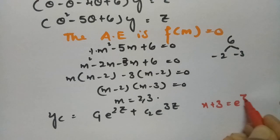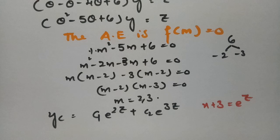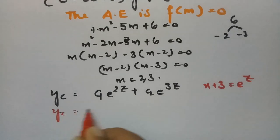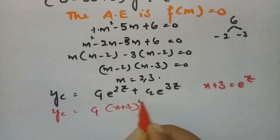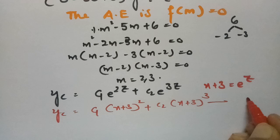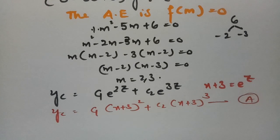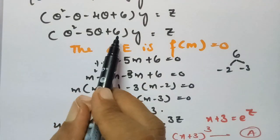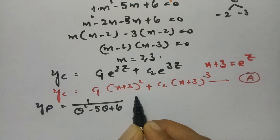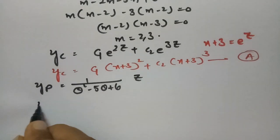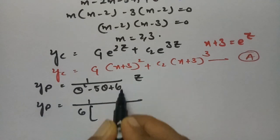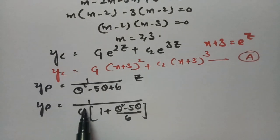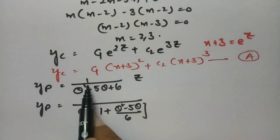Therefore yc = c1·e^(2z) + c2·e^(3z). Since x+3 = e^z, substituting back: yc = c1·(x+3)^2 + c2·(x+3)^3. This is equation (a), the complementary function. For the particular integral, yp = [1/(θ^2 - 5θ + 6)]·z. Taking 6 common: yp = (1/6)·[1 + (θ^2 - 5θ)/6]^(-1)·z.